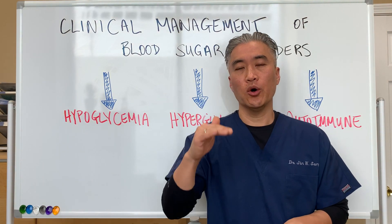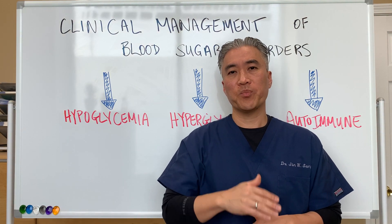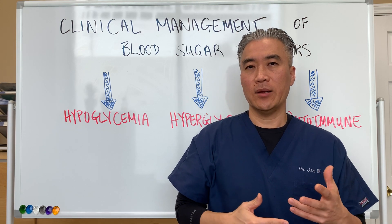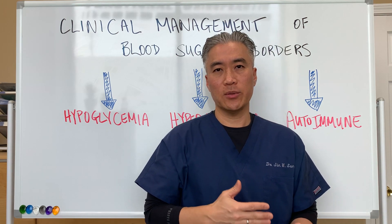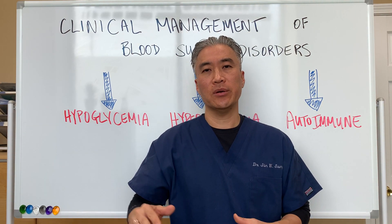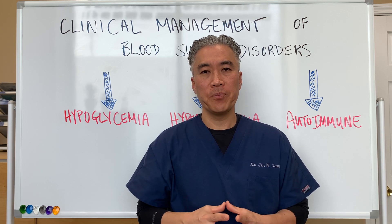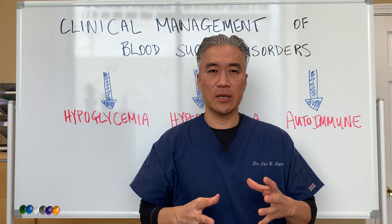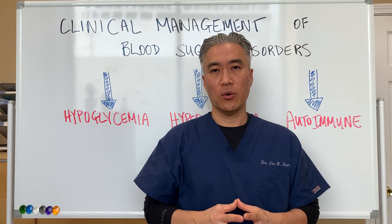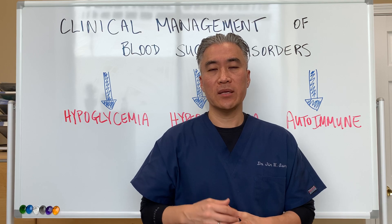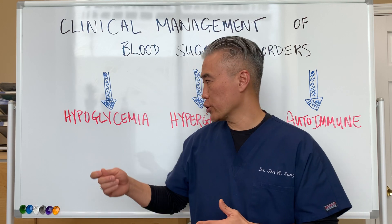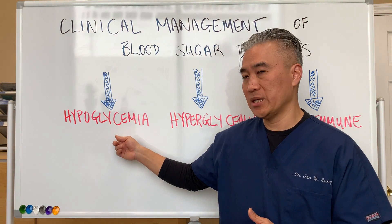Hypoglycemia is the low blood sugar or fluctuations where you eat and then maybe an hour or two later you have a quick drop in blood sugar — you get shaky, irritable, and feel like you might pass out or get angry. These are the people who have low blood sugar or hypoglycemia.